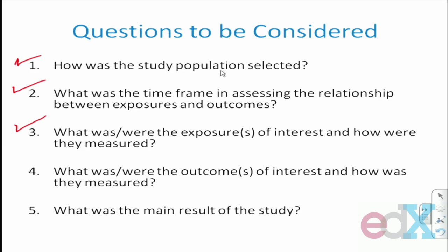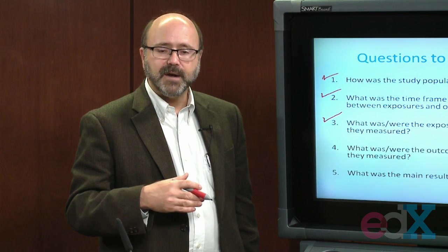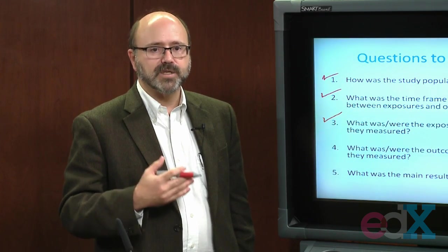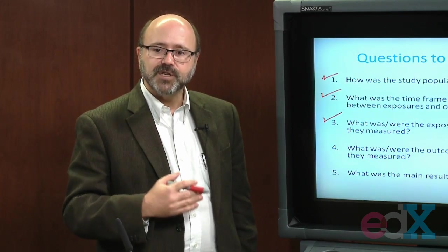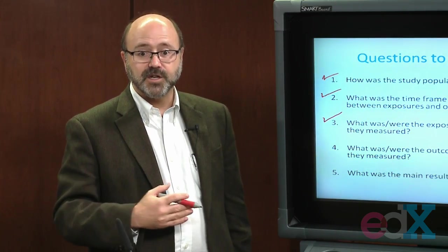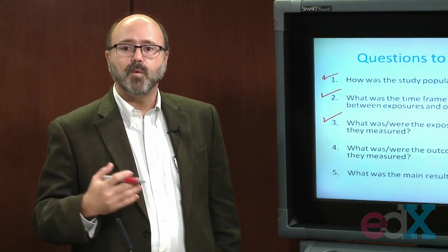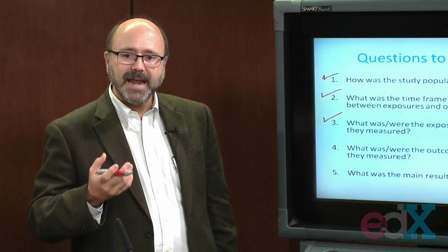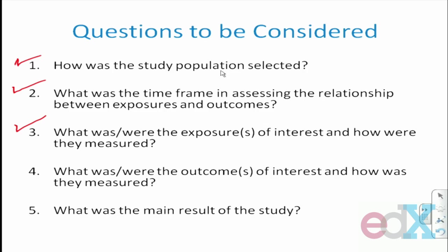The next thing to think about is the outcomes of interest. In this study, where we're looking at vestibular function and balance, how was it measured? Think about the quality of that measurement. Was it measured consistently? How is it coded, recorded, and graded? What are the different dimensions of the outcome, and how is it operationalized in this study?